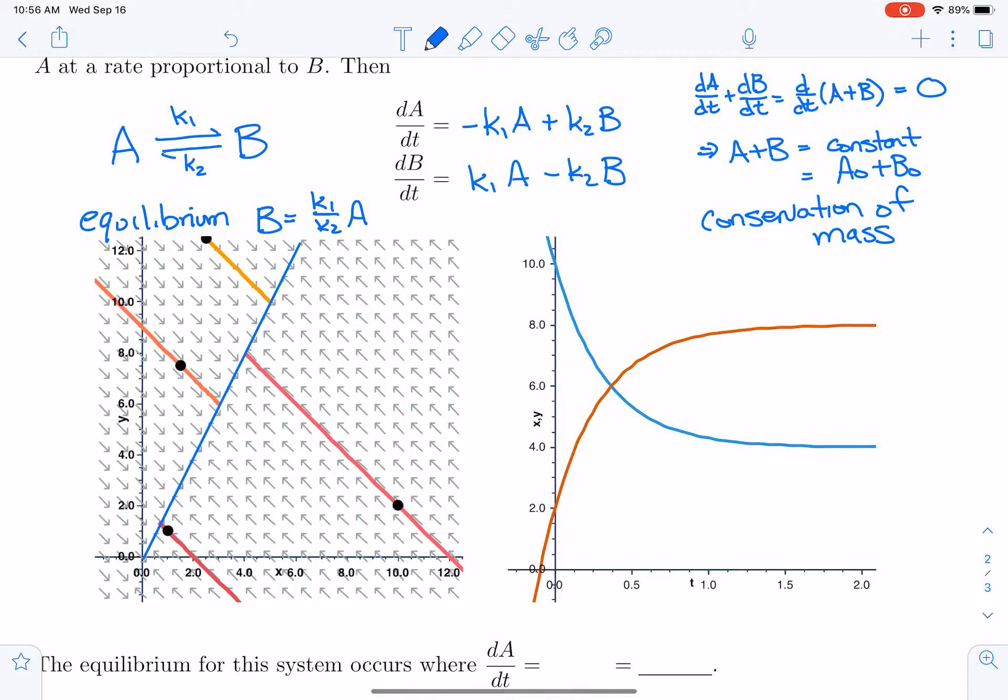Each one of the points here, each one of the points on this line, is on the line B equals k1 over k2 times A, and each point there is an equilibrium point.